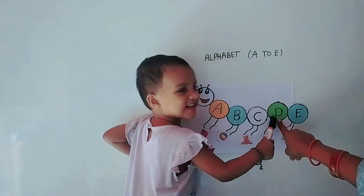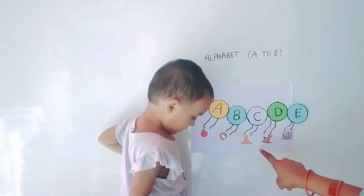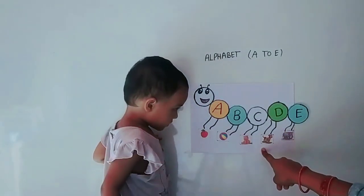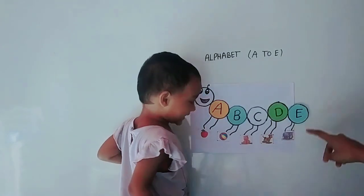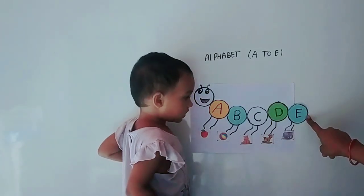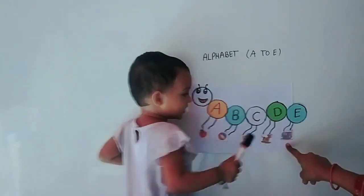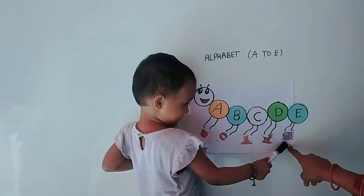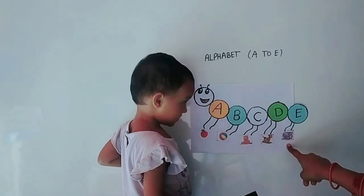D, D for Dog. Which letter is this? E, E for Elephant.